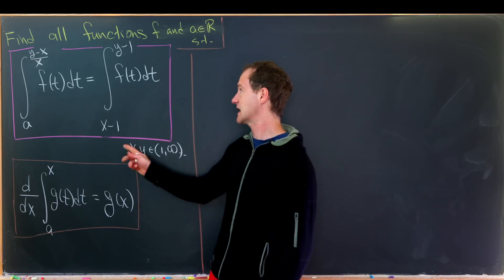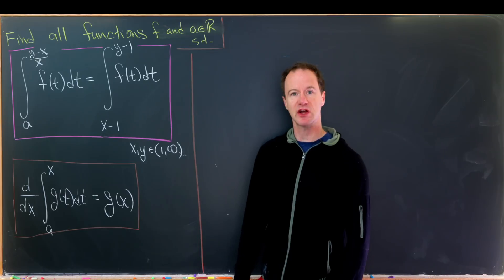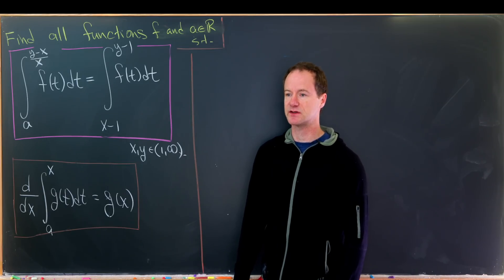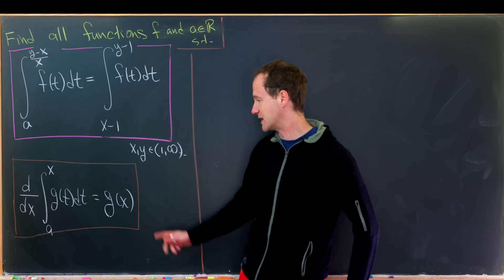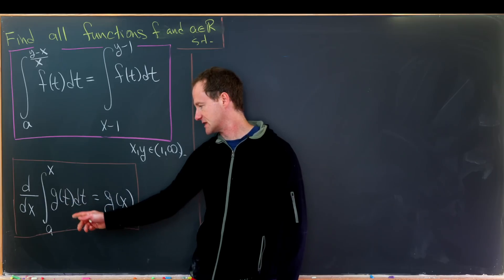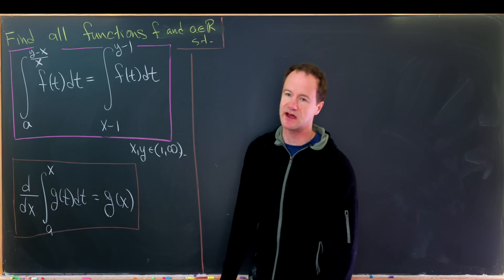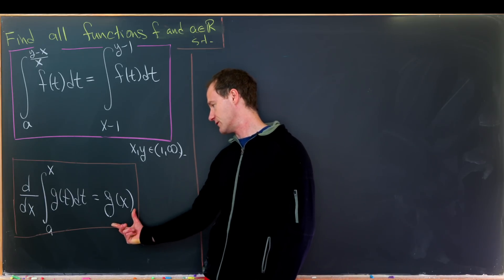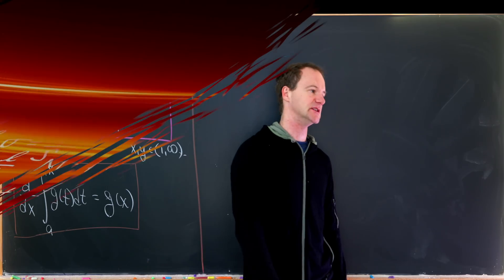Notice that x and y are both variables. Anytime you see variables as bounds of integration, you should think back to the Fundamental Theorem of Calculus — depending on the textbook, it might be part one or part two. It states that the derivative with respect to x of the integral from a to x of g(t) dt equals g(x), or in other words, the antiderivative of g(x) is the integral from a to x of g(t) dt.